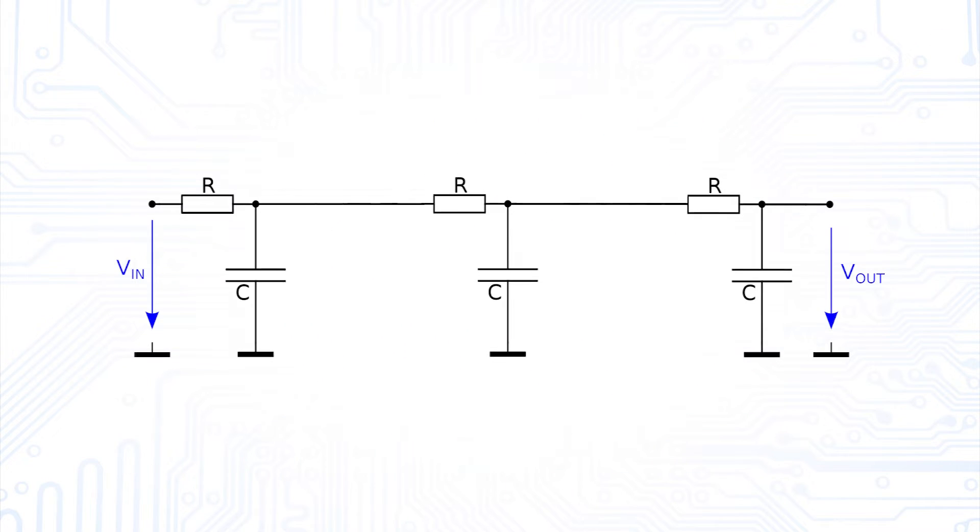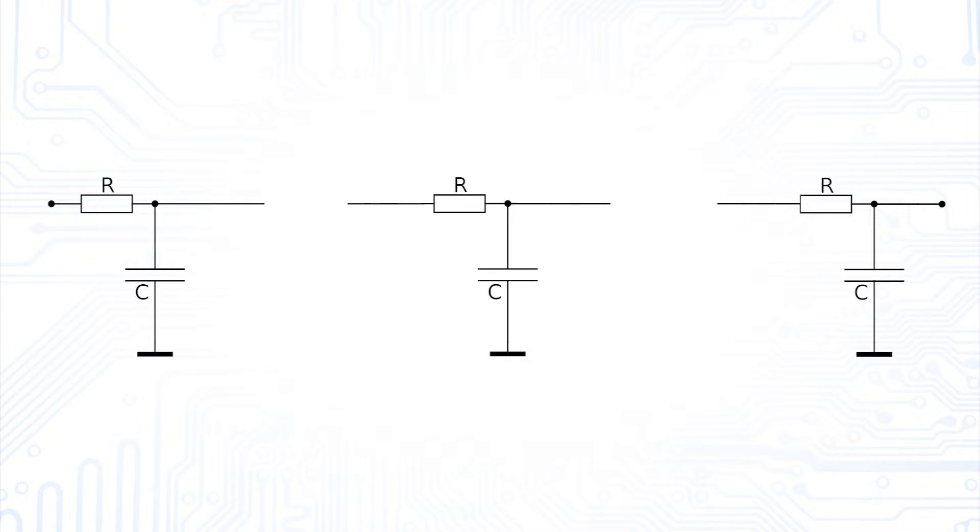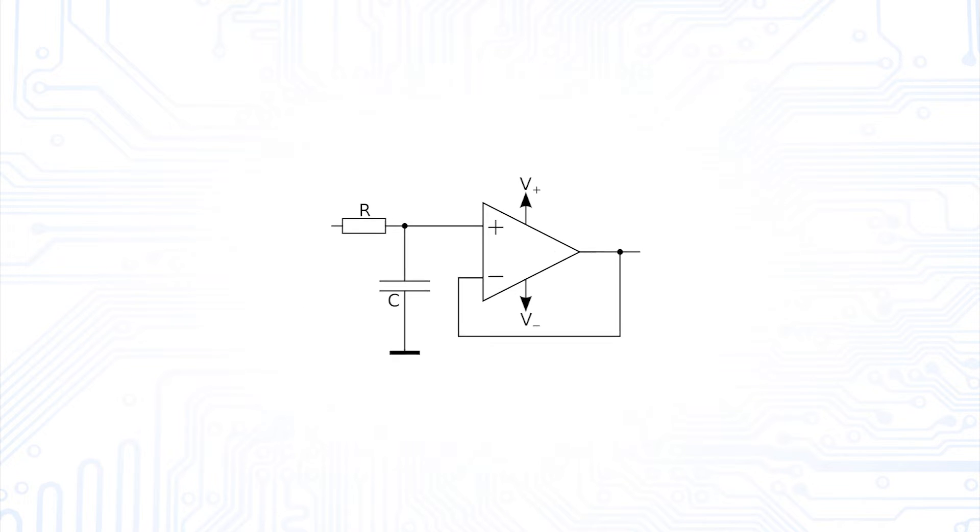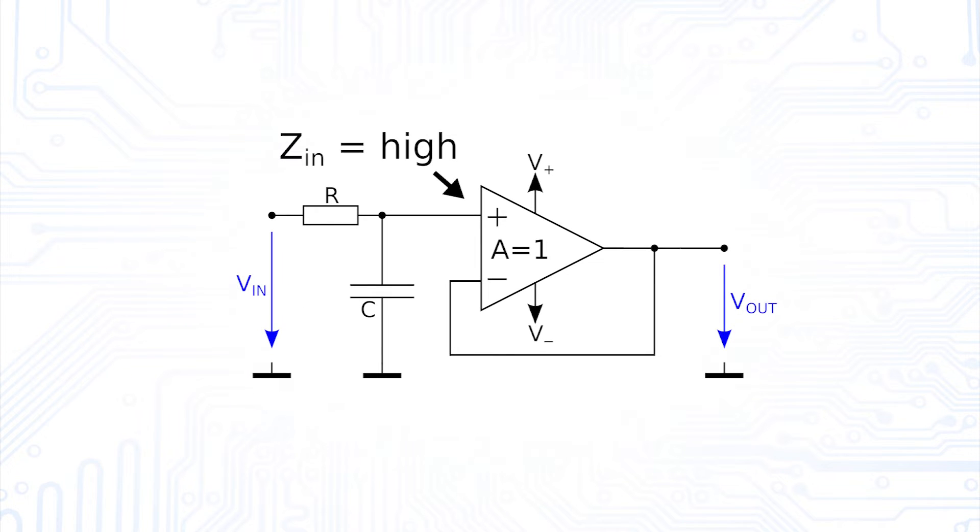Due to their high input and low output impedance, we can separate the individual stages from each other. More precisely, while the high input impedance ensures that the filter output is not overloaded, the low output impedance ensures that the cutoff frequency of the filter is not affected by the attached load.